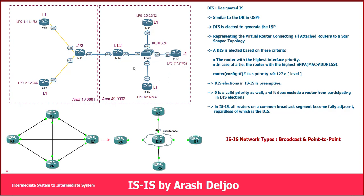Also between router three and router four we have an Ethernet link - this is also the broadcast network type because it is an Ethernet link, and on Ethernet we use broadcast network type. In this picture we have four routers: R4, R5, R6, and R7, and between them we are using one Ethernet switch.